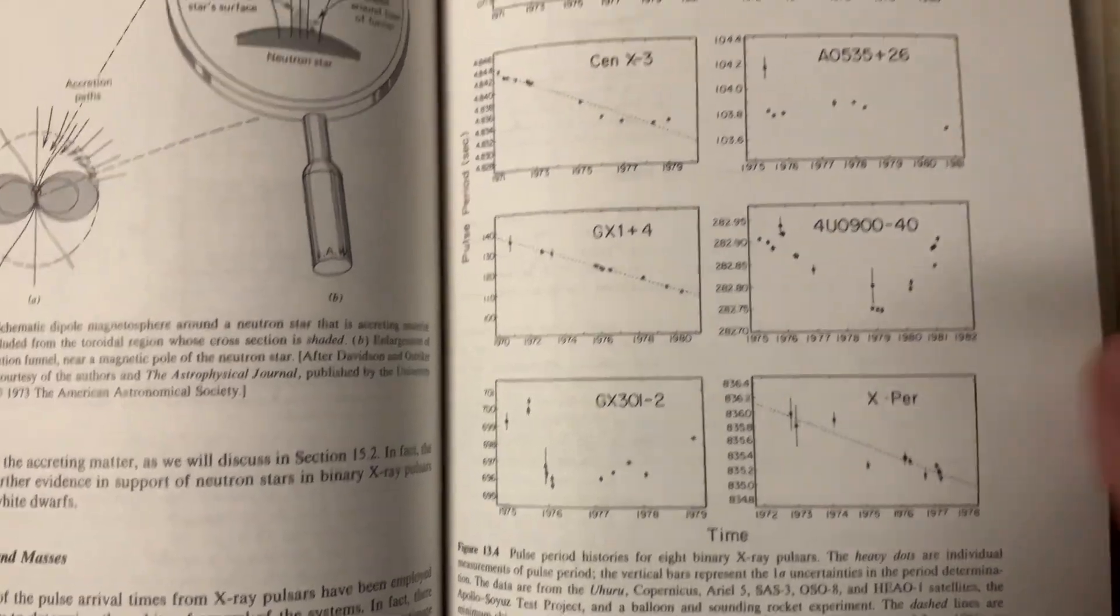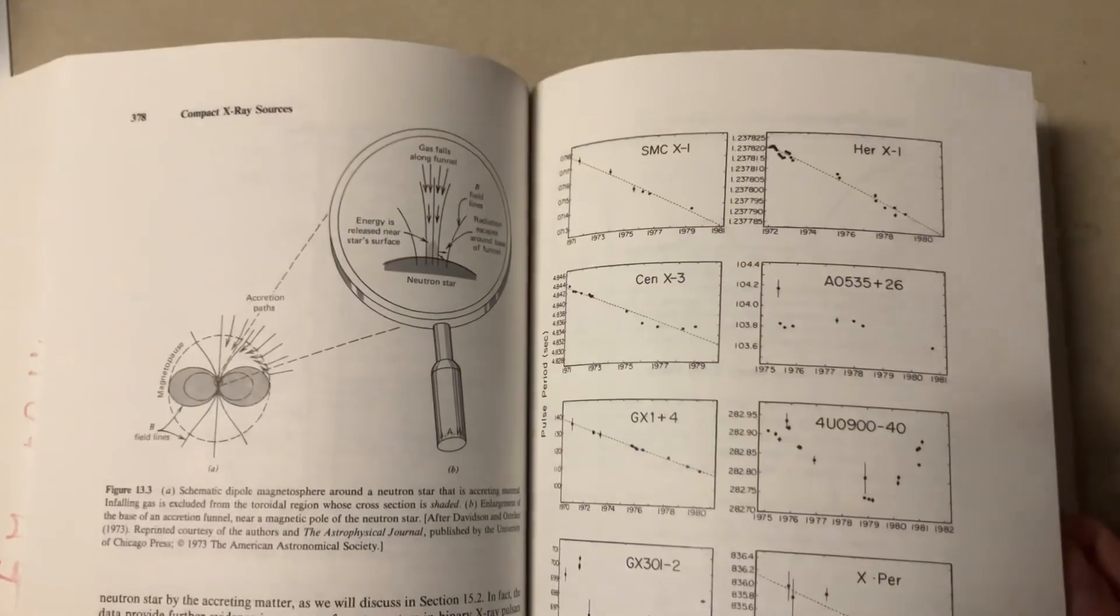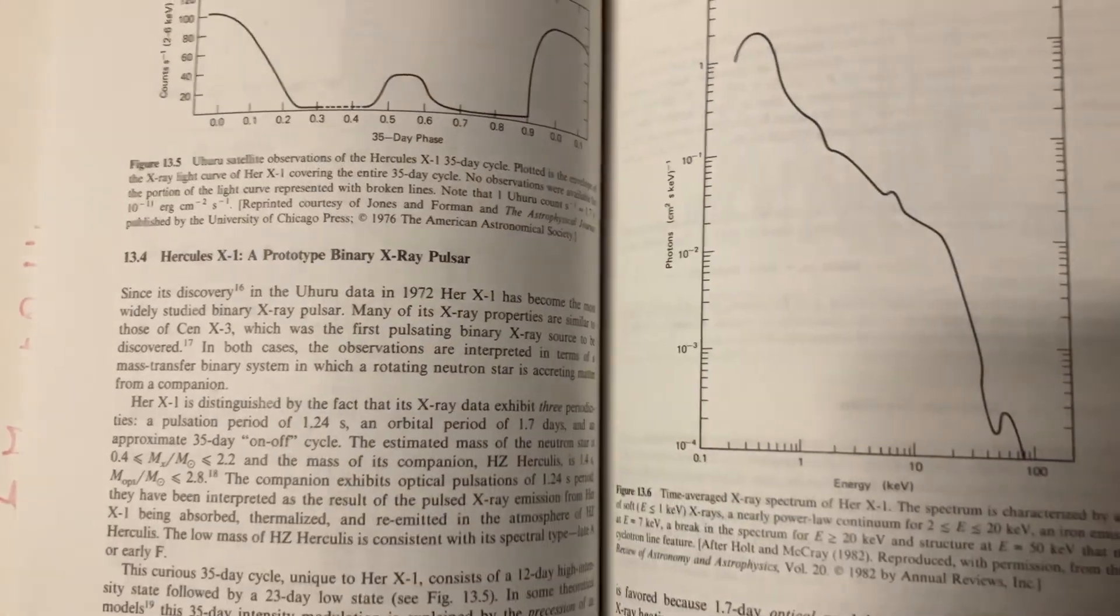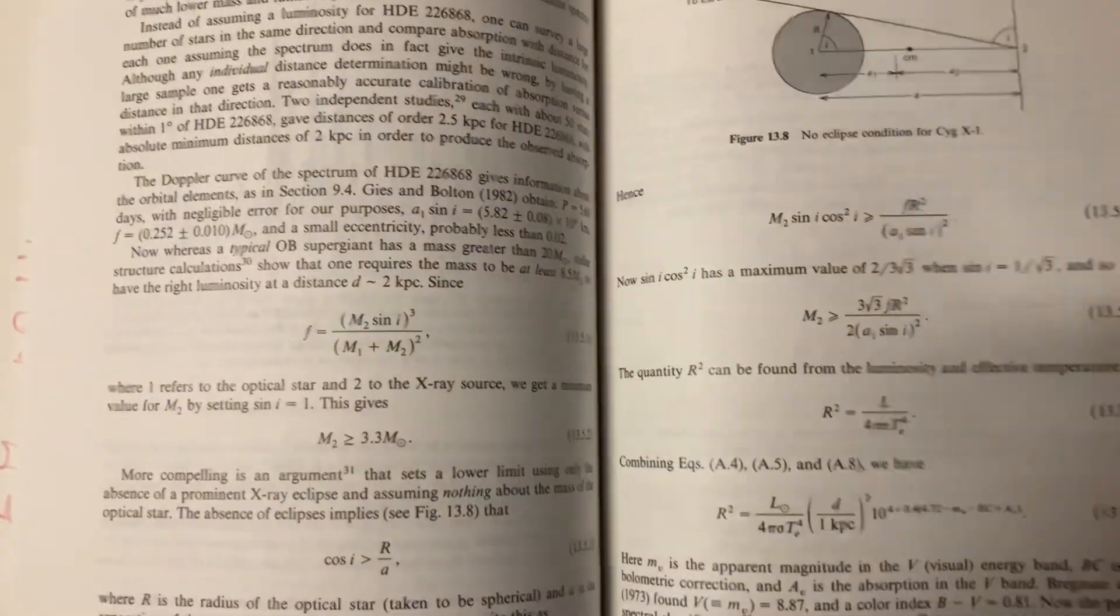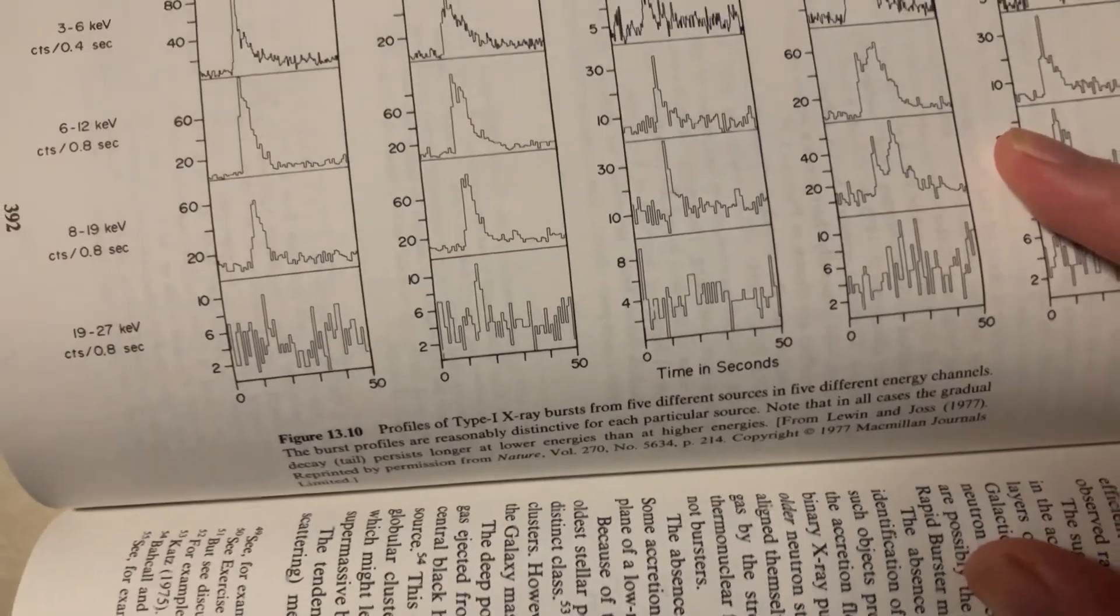Some different pulse periods. Don't know what that even means. But I guess these are pulsars that are like sending out pulses or X-ray sources maybe. Some different equations there. It's kind of cool. Wow. What the heck is this? Type 1 X-ray bursts. It's kind of cool.